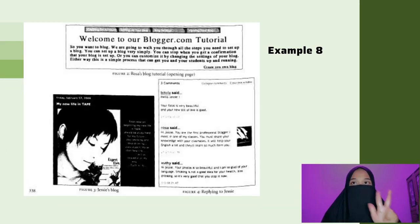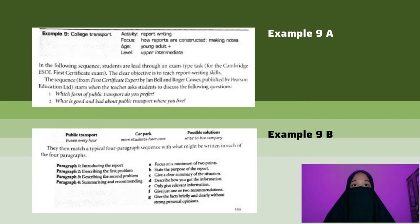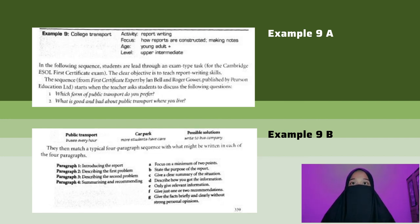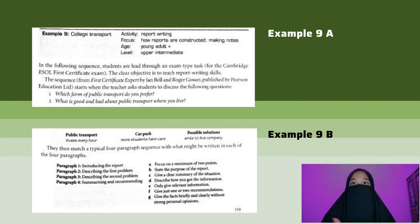Eighth example: This example shows a student's writer's block in action. There are points where the writing teacher would want to intervene. Ninth example: Students have to look at the task and decide how many parts there are to it and how informal or formal the style should be. Once the teacher has discussed these questions with the class, they can start planning for the report by making notes under three headings, then match a typical four-paragraph sequence with what might be written in each paragraph, as shown in picture 9b.